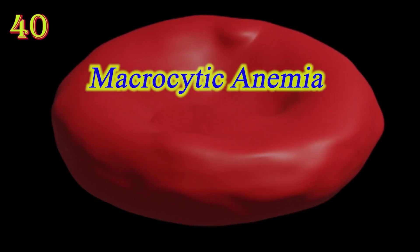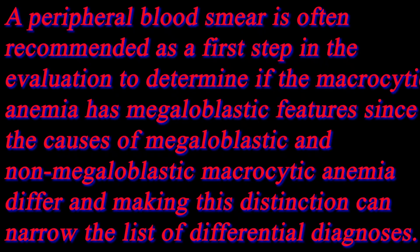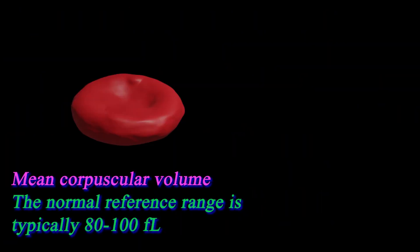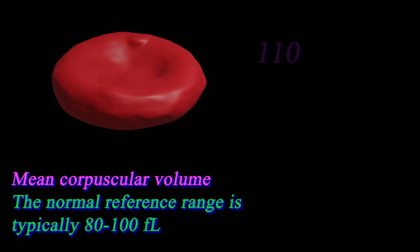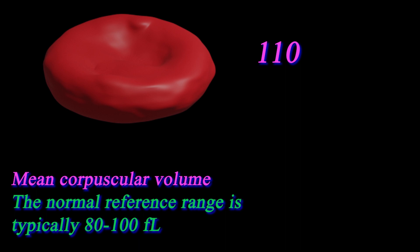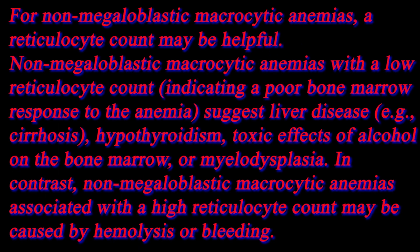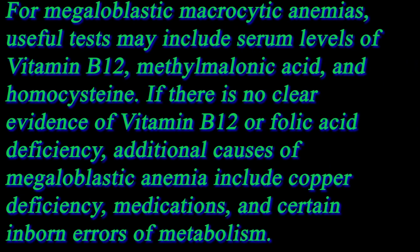Macrocytic anemia: RBCs are larger than normal with insufficient hemoglobin concentration. The RBCs grow larger because they cannot produce DNA quickly enough to divide at the right time, and thus grow too large before division. Deficiency of vitamin B12, folate, and some medications can cause macrocytes.